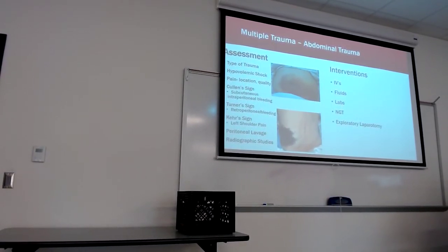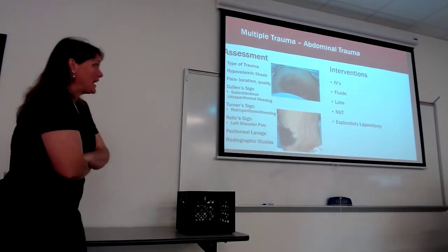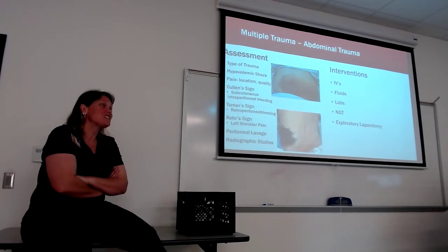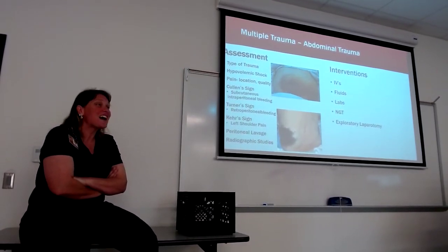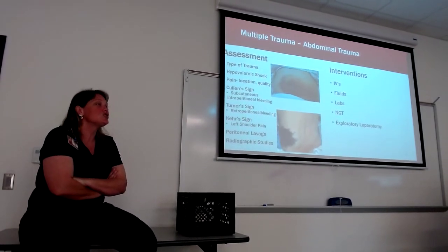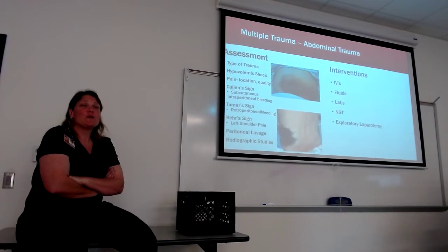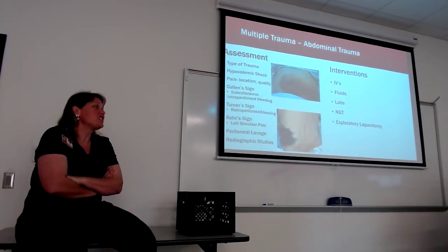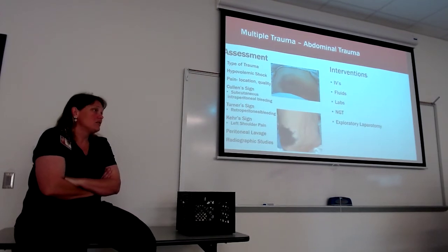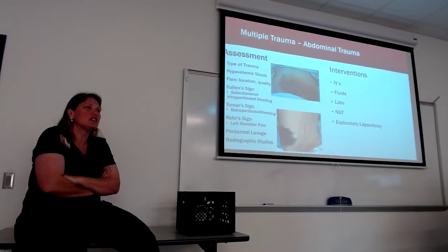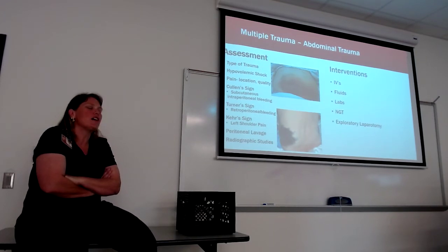Other signs: abdominal pain with a mechanism of injury — car wreck, boat accident, contact sports. Vital signs showing tachycardia and hypotension without an obvious source of blood loss should make you look at the abdomen. The abdomen will become tight and distended with distant bowel sounds — not absent, but distant, like listening to bowel sounds through fluid, because you essentially have blood sitting between the skin and intestines.